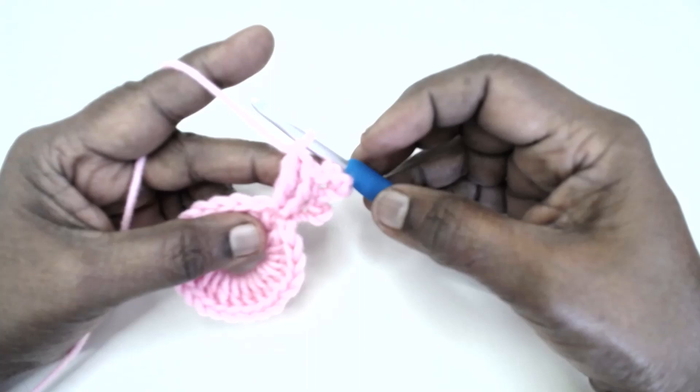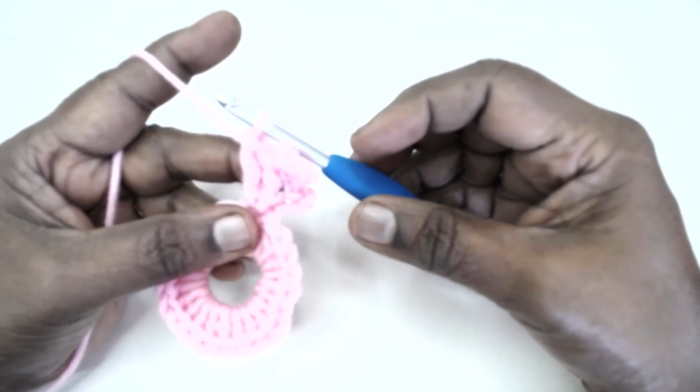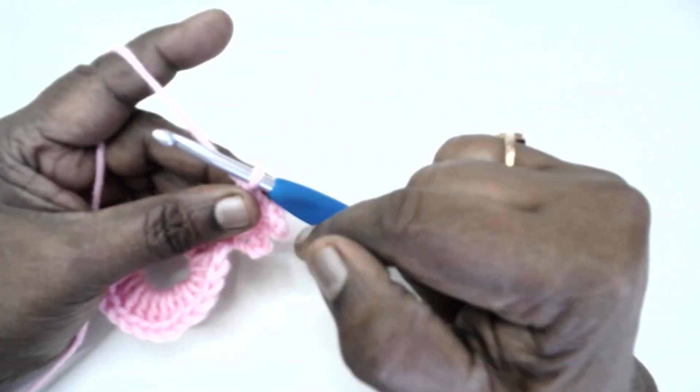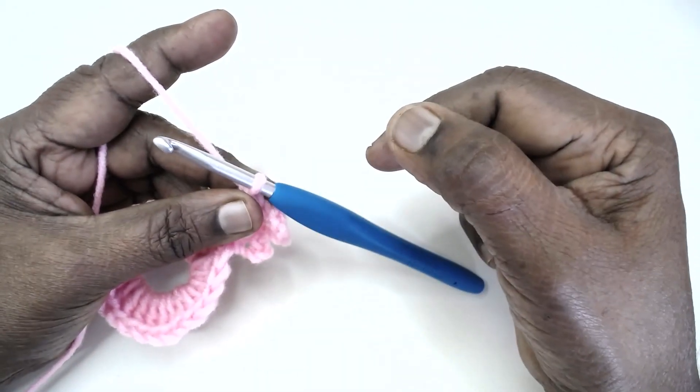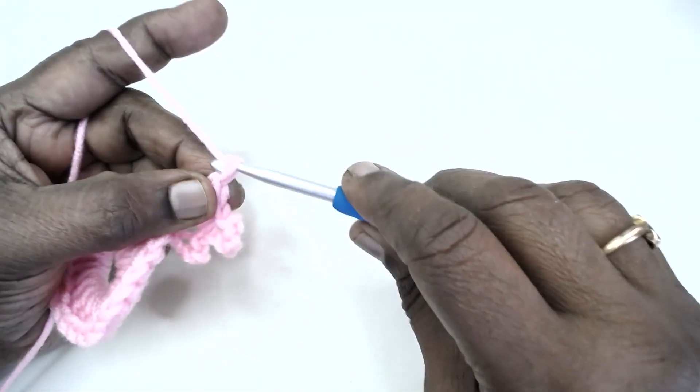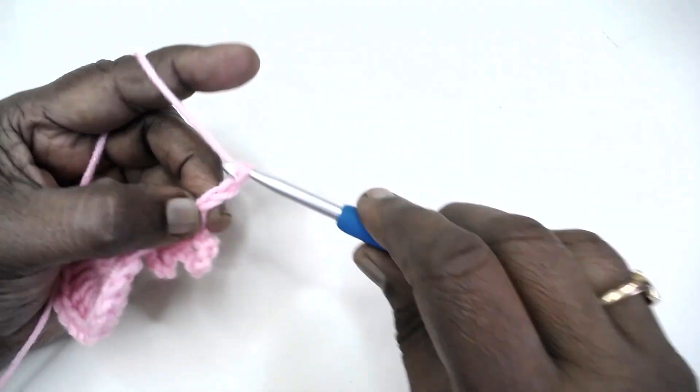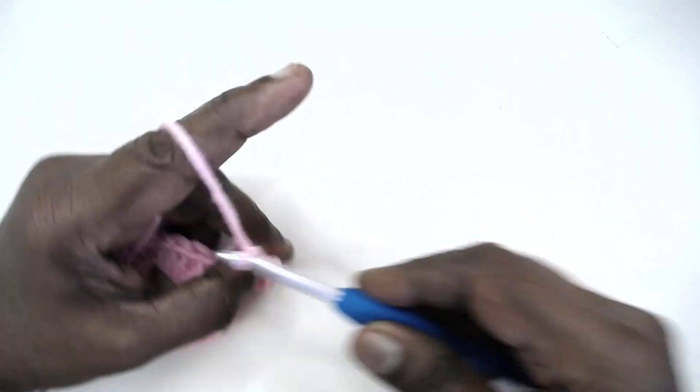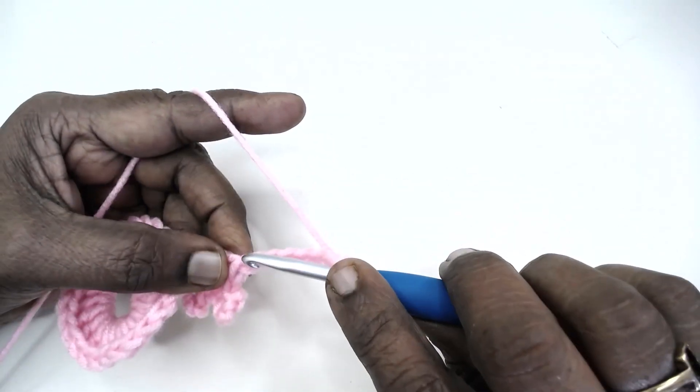Having done this, we are going to make the trefoil. Trefoil is made up of chain 7, slip stitch to the first chain; chain 9, slip stitch to the first chain; chain 7, slip stitch to the first chain. Let us chain 7: one, two, three, four, five, six, and seven. Slip stitch to the first chain.